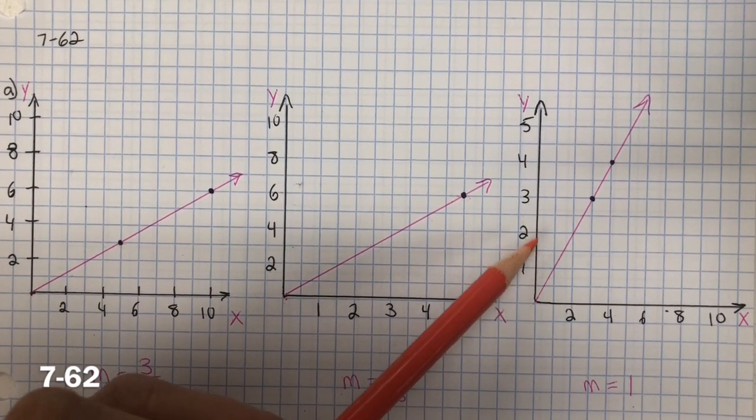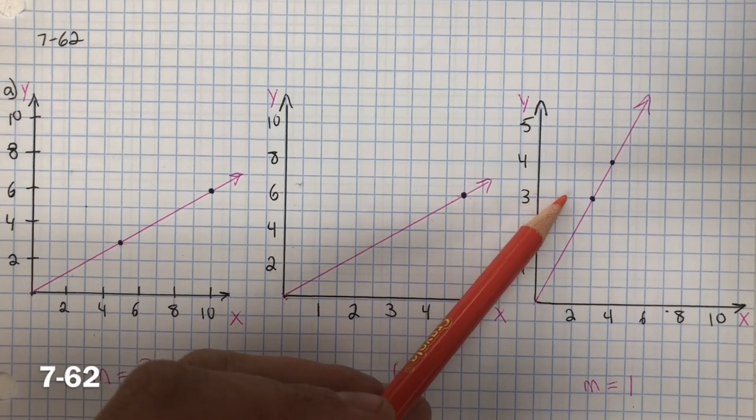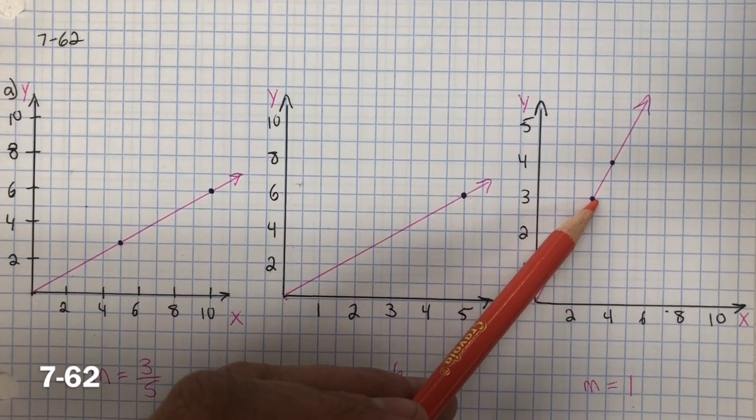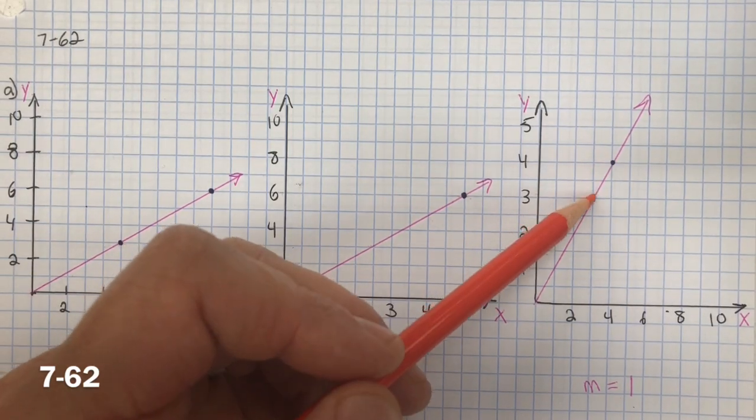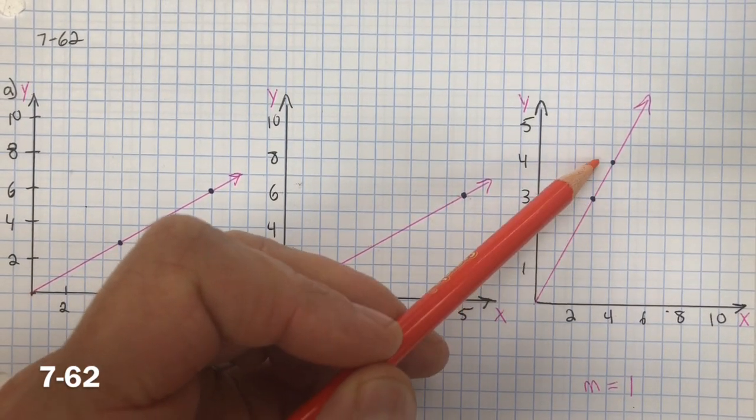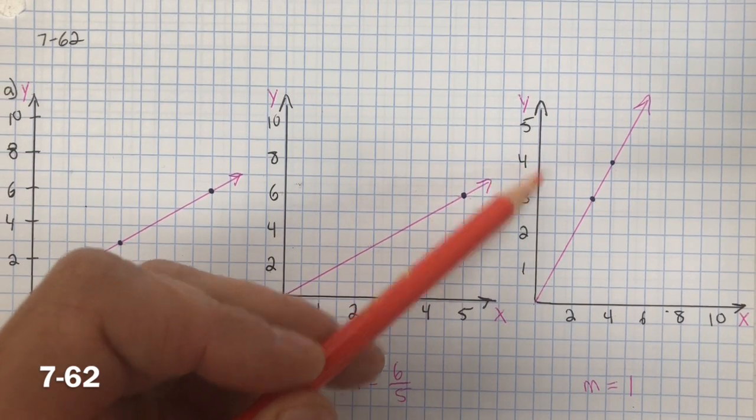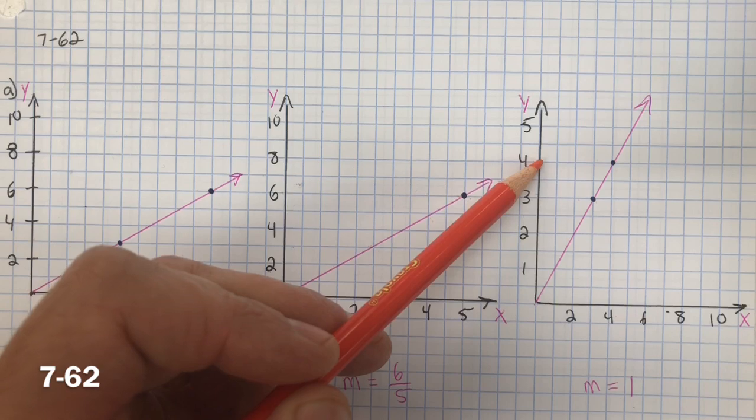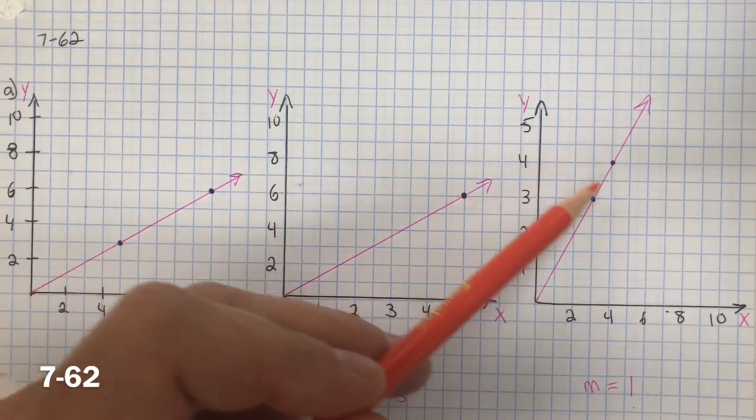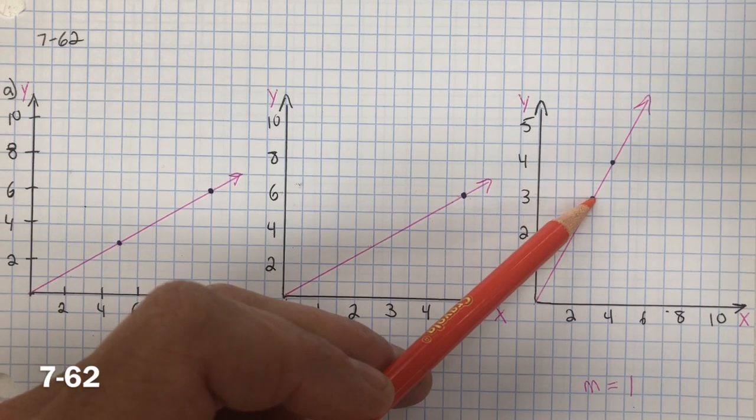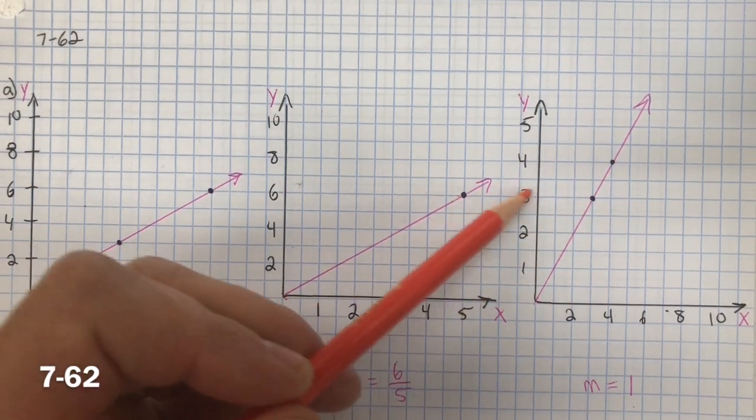For the third one, it's a rise of 3 and a run of 3. So it's 3 over 3, which is just 1. Or I can choose these two lattice points and it's 1 over 1. And again, you have to pay attention to these intervals. It's every other box is 1 unit. So rise 1 over 1. A very common mistake is to say the slope of this is 2, but you have to pay attention to these.